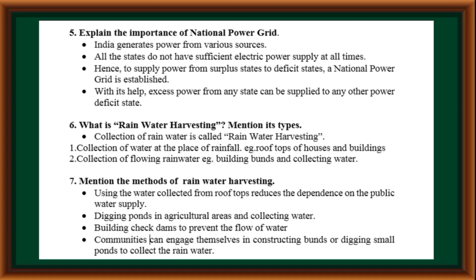Mention the methods of rainwater harvesting. Using water collected from rooftops reduces dependence on public water supply. Digging ponds in agricultural areas and collecting water. Building check dams to prevent the flow of water. Communities can engage in constructing bunds or digging small ponds to collect rainwater.